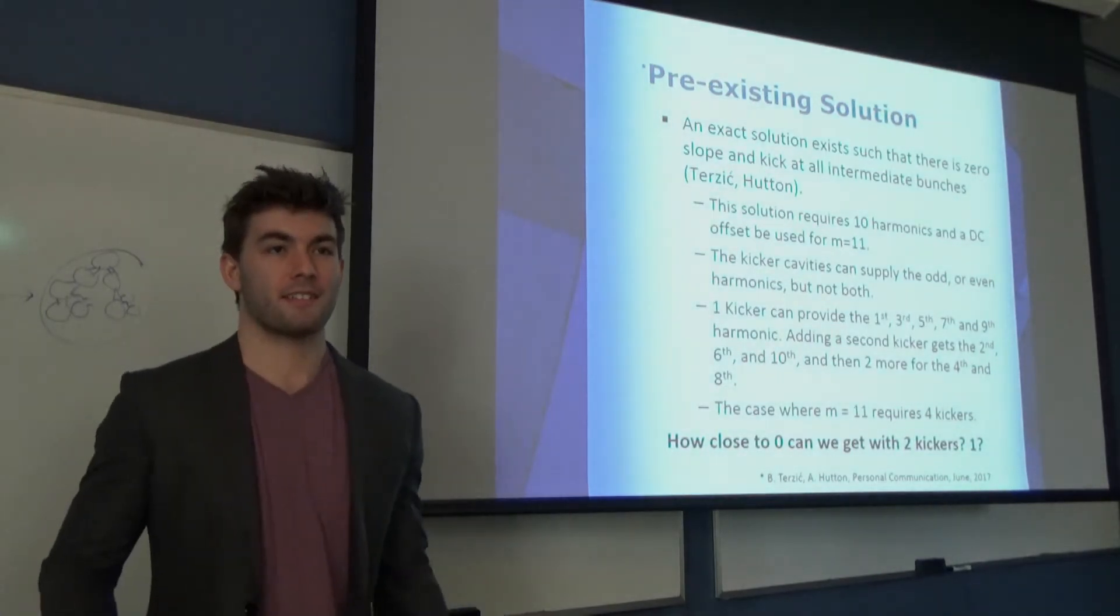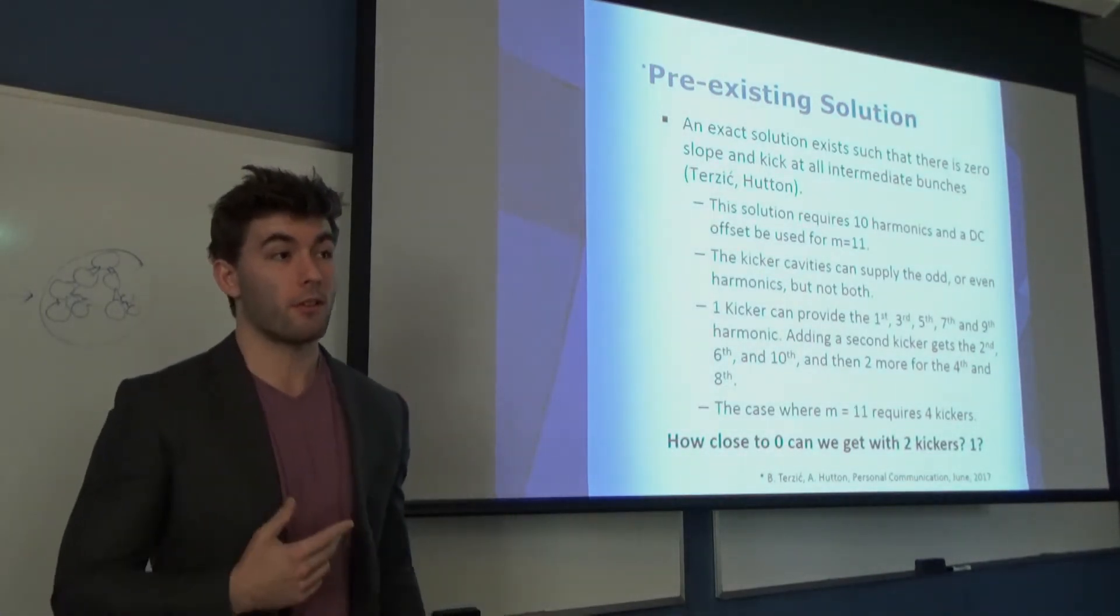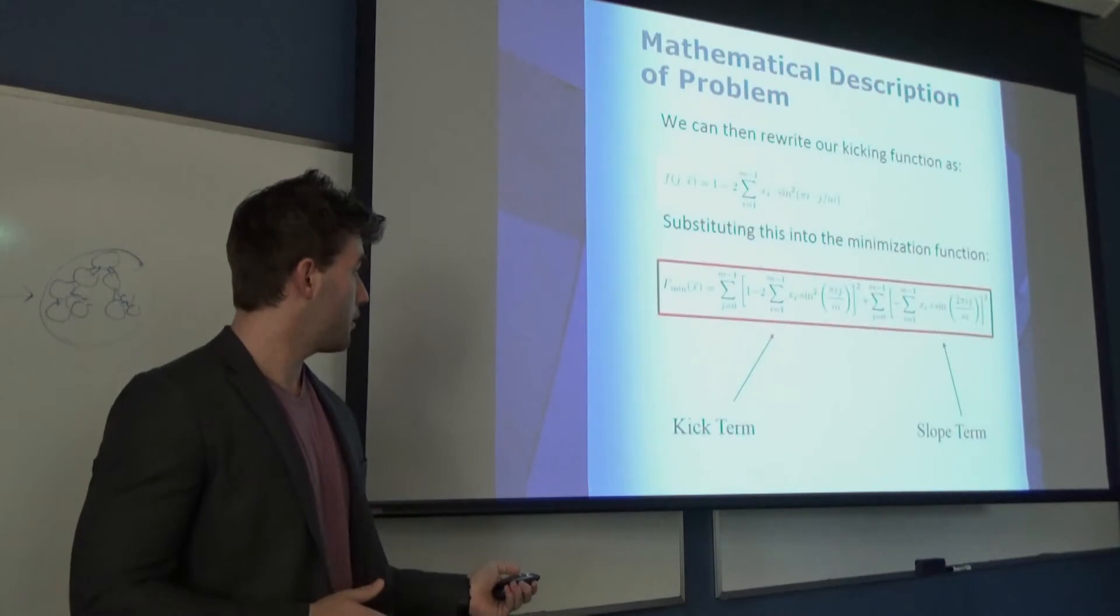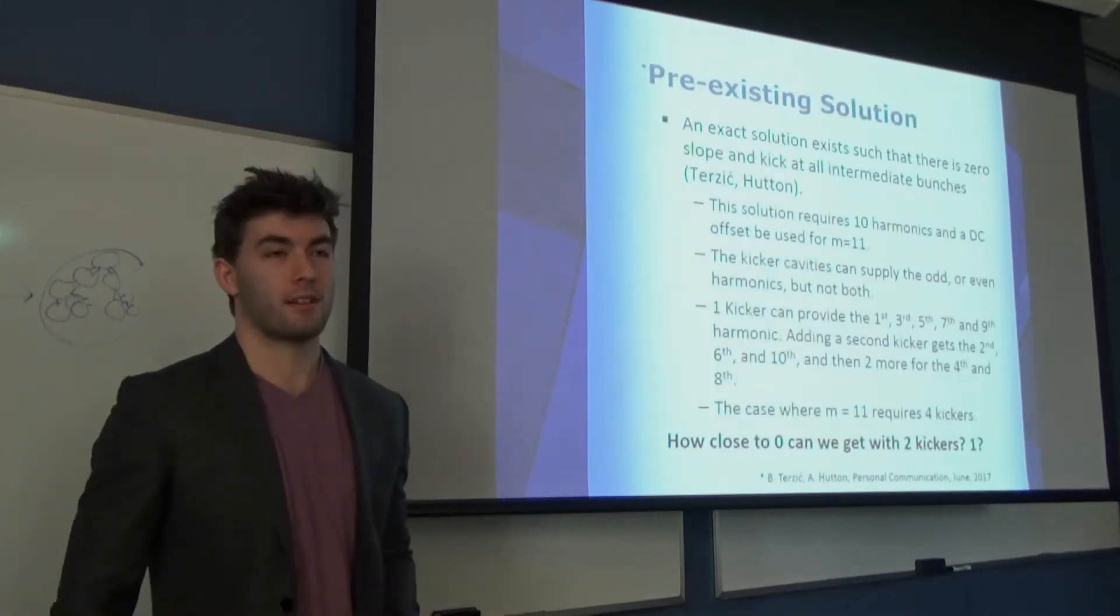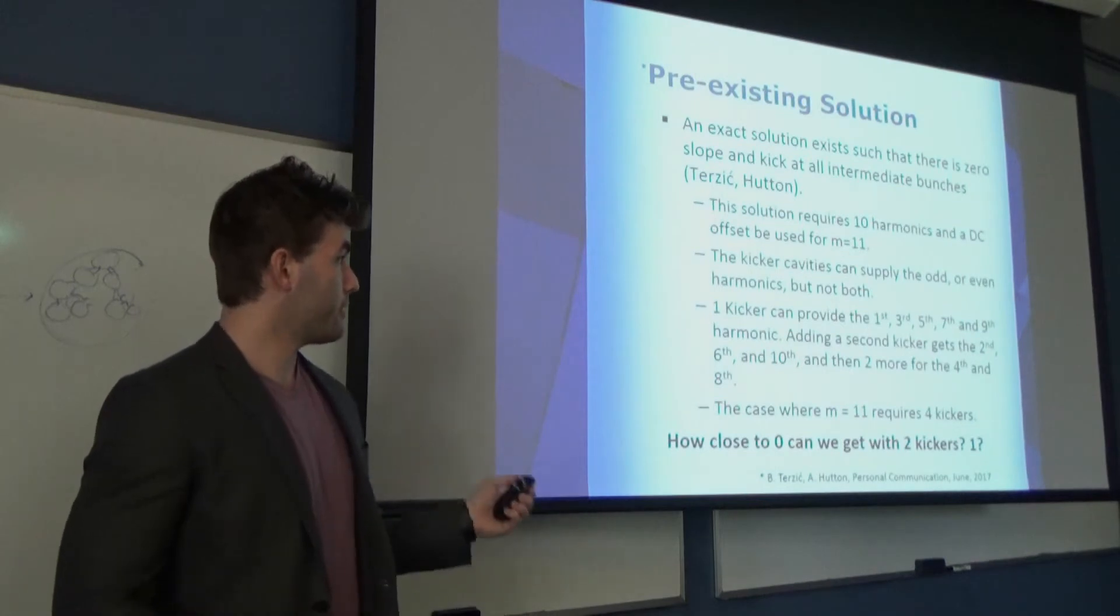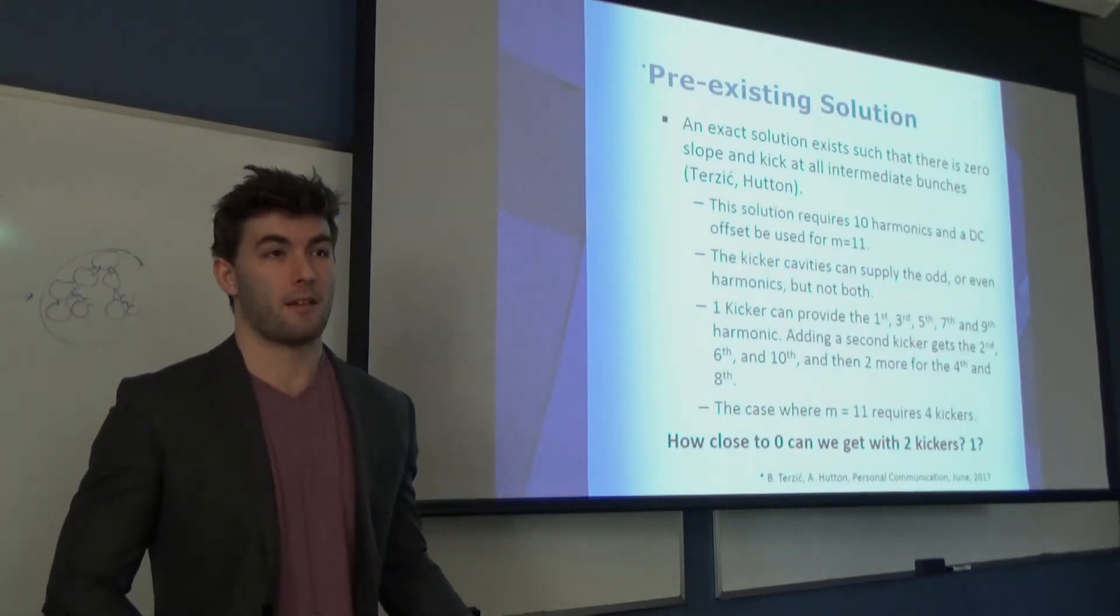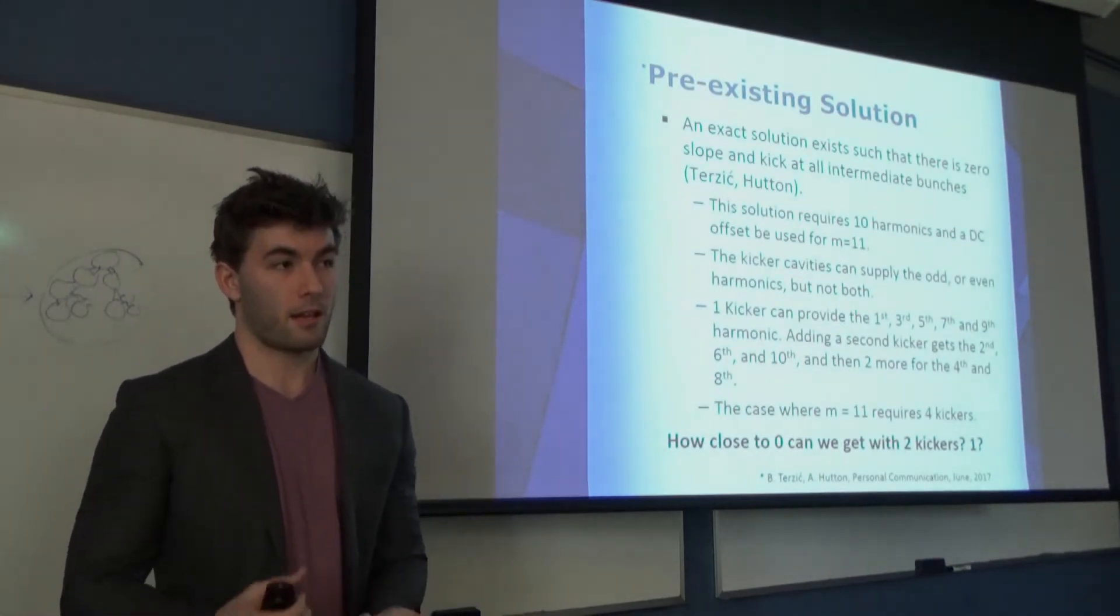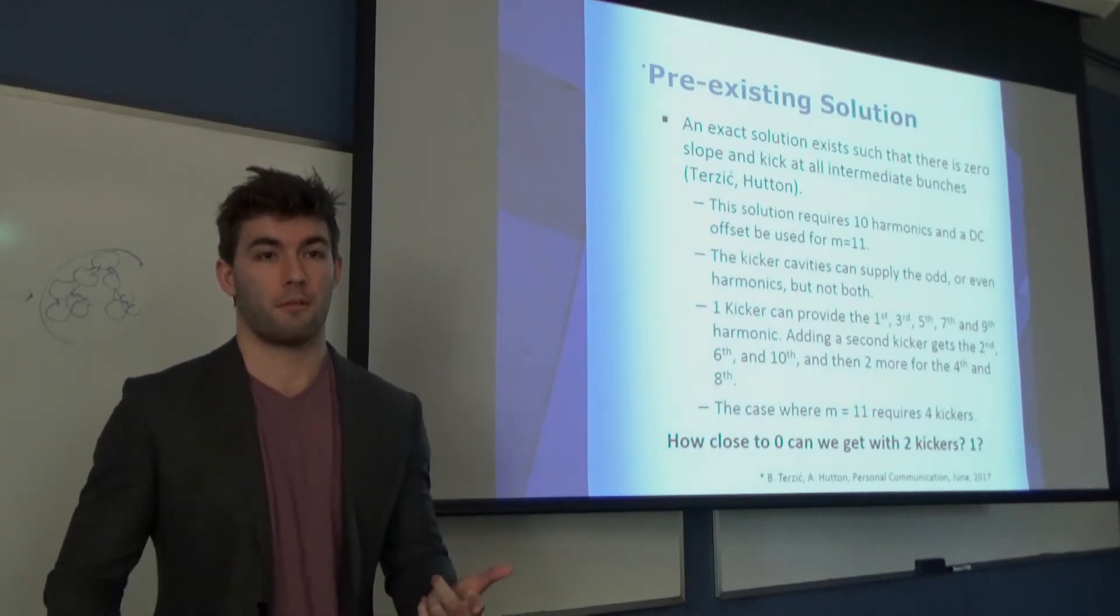There's already a pre-existing solution that says if we use all terms of that series, we can get zero kick and zero slope at every single intermediate bunch. And that's great, but using the five cell kicker cavities that we have at Jefferson Lab, those can provide either the odd terms or the even terms, but not both.